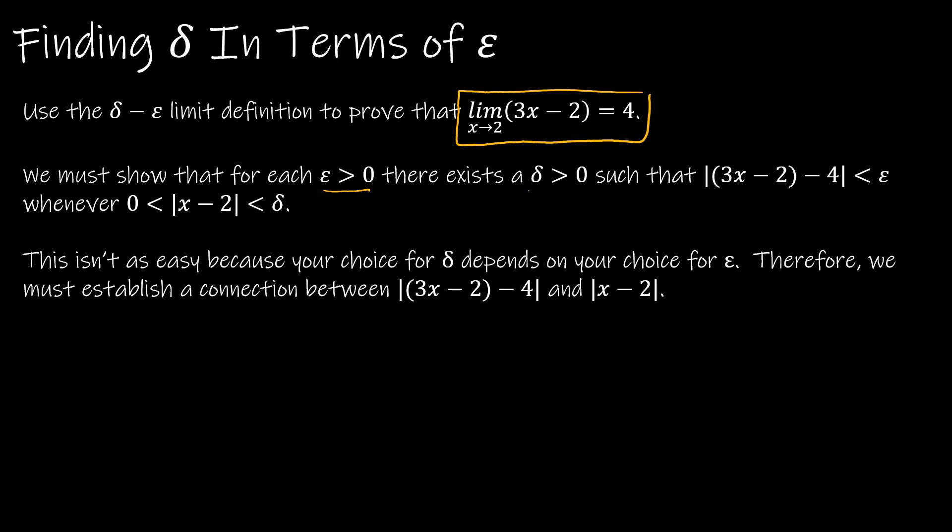And essentially, what we're doing is we're finding what does delta equal in terms of epsilon. So what we have to do is show that for each epsilon, there exists a unique delta such that this is true. The absolute value of |(3x - 2) - 4|, which is of course f(x) - L, is less than epsilon. Whenever 0 is less than |x - 2| is less than delta. So because it has to be a unique value, we have to determine it in terms of epsilon. So how am I going to make a connection between these two things?